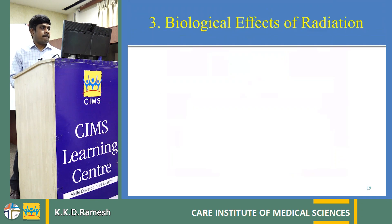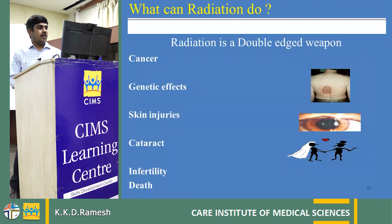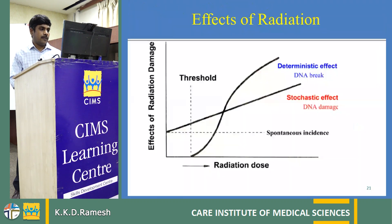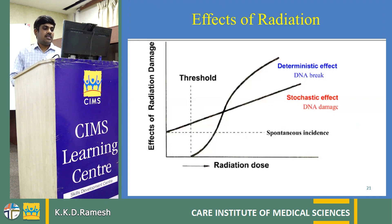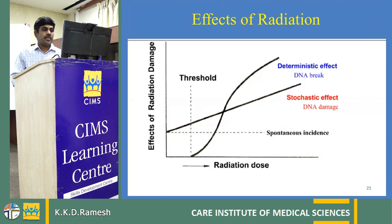Radiation is a double-edged weapon. It may lead to cancer, genetic effects, skin injuries, cataract, infertility, and death. Radiation effects are classified into two types: stochastic effects and deterministic effects. In stochastic effects, there is no dose limit — it is probabilistic in nature and may or may not occur. In deterministic effects, there is a threshold dose limit; after crossing the threshold, the effect will appear.